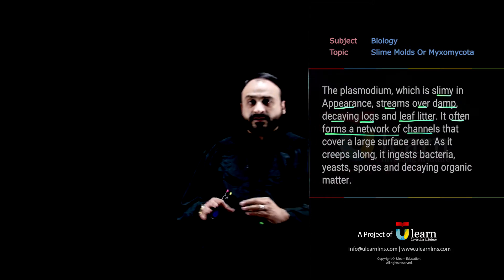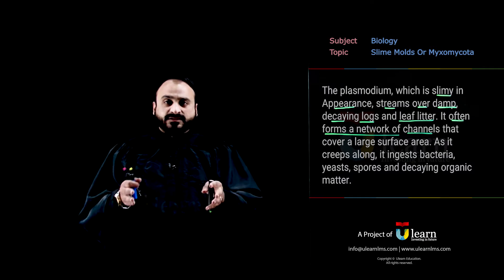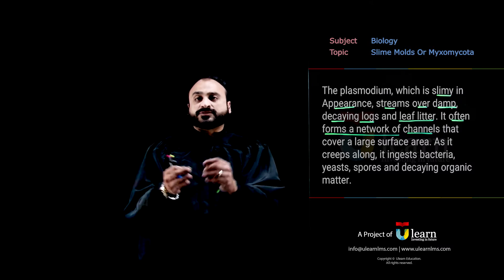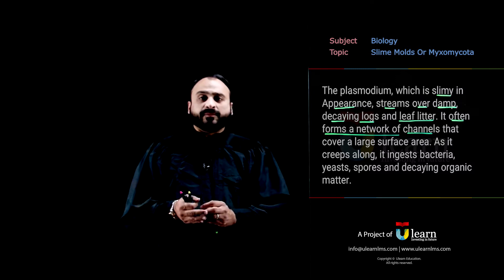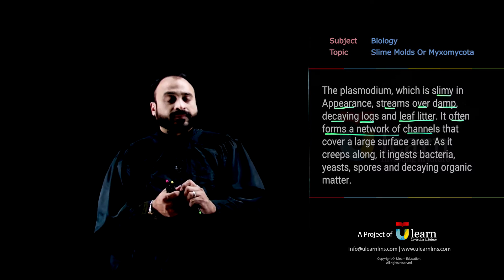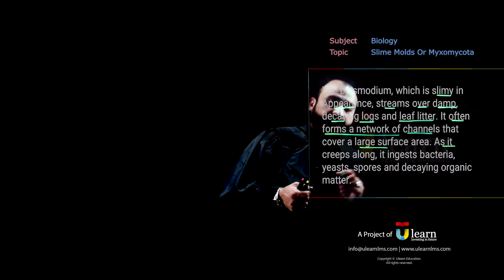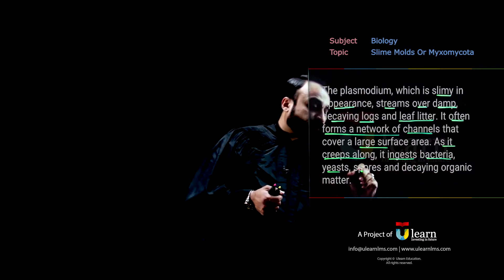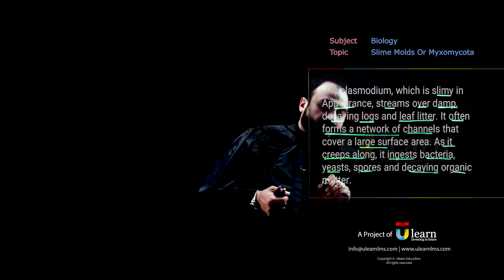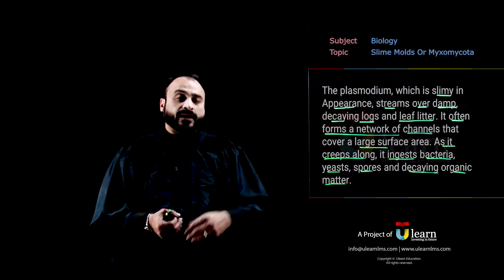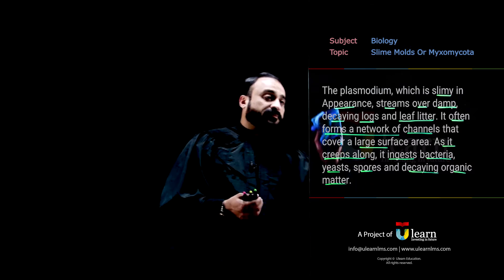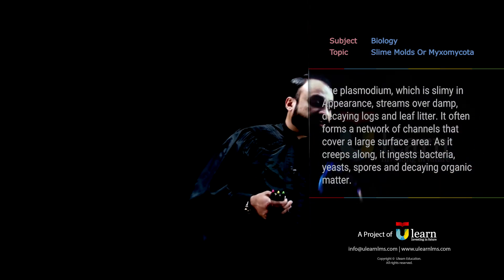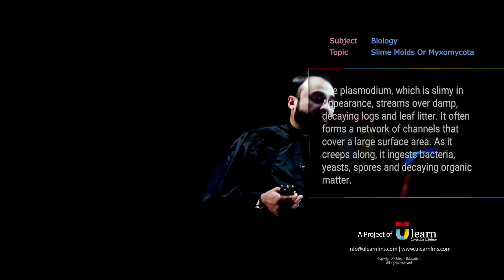It forms a network of channels — this is how the plasmodium spreads. This cytoplasmic structure extends and spreads itself across an entire area to absorb all available organic material by creating a large surface area. As it creeps along it ingests bacteria, yeast spores, and decaying organic matter available in that environment. The more organic material it gets, the more its size increases, up to one foot.